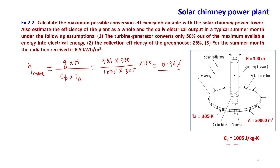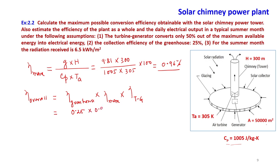The overall efficiency is calculated as: eta_overall = eta_greenhouse × eta_max × eta_turbine-generator = 0.25 × 0.0096 × 0.5 = 0.0012, which is approximately 0.12%. The assumptions used are: turbine-generator converts 50% of maximum available energy, collection efficiency of the greenhouse is 25%, and radiation received in a summer month is 6.5 kWh/m².